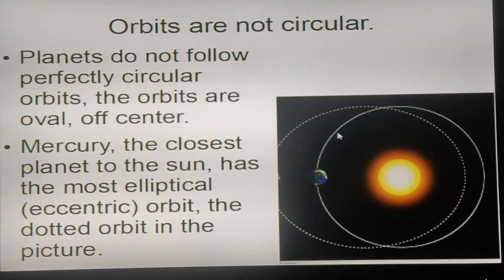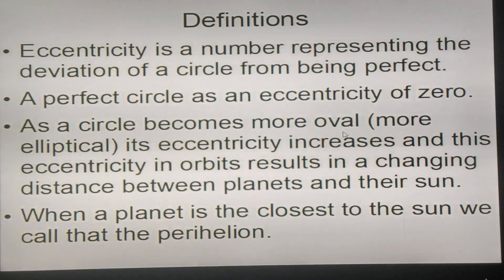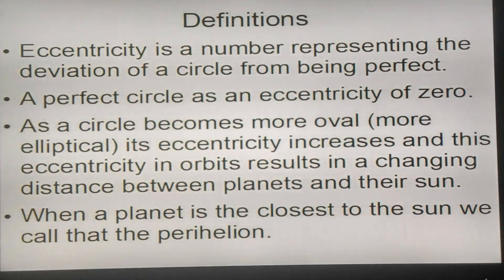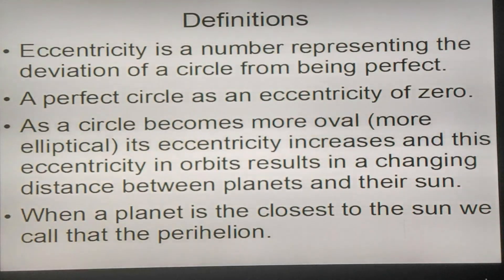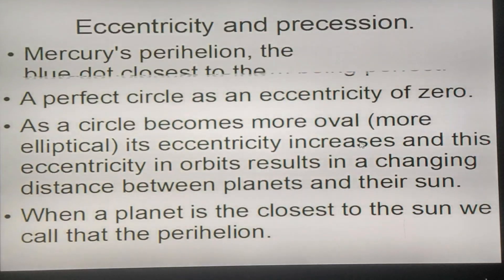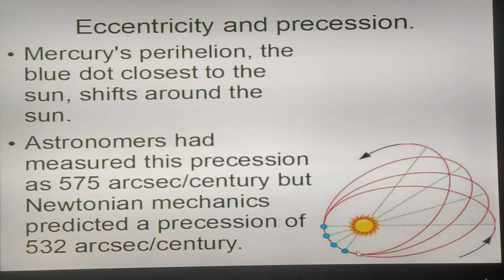This would be a planet in a perfectly circular orbit. I need to define a couple of terms. Number one is eccentricity — a number that represents the deviation of a circle from being perfect. A perfect circle has an eccentricity of zero. As the circle becomes more oval, more elliptical, its eccentricity increases. This eccentricity in orbit results in a changing distance between planets and their Sun. When a planet is closest to the Sun, we call that the perihelion. Mercury's perihelion, shown as the blue dot, shifts around the Sun.